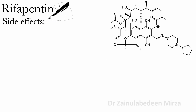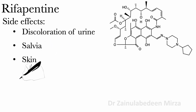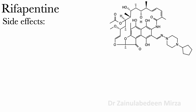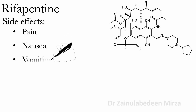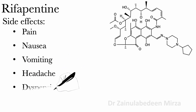Side effects of Rifabutine are discoloration of urine, saliva, skin, sputum, and sweat. Also pain, nausea, vomiting, headache, dyspepsia, and hypertension.